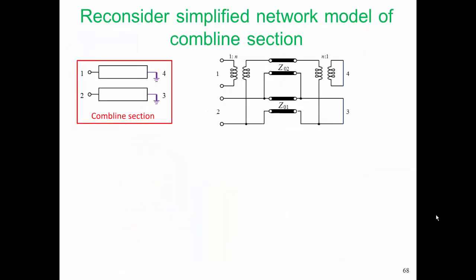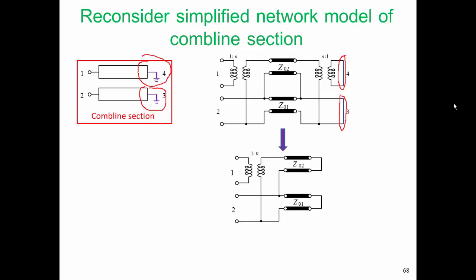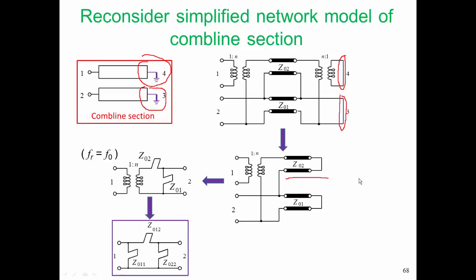So let's consider how we came up with our simplified model. So we have a pair of coupled lines here in our combline section. We have a short circuit at two ports, three and four, and so we implement those short circuits in our approximate model. That reduces to that form. That reduces to a form where the stubs are shown explicitly.